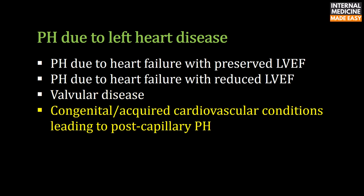Congenital post-capillary obstructive lesions — for example, pulmonary vein stenosis, cor triatriatum, obstructed total anomalous pulmonary venous return, coarctation of the aorta, etc. — can cause pulmonary hypertension.